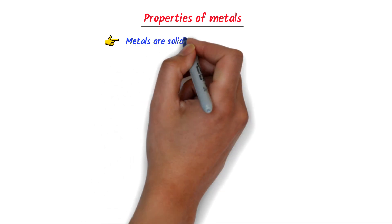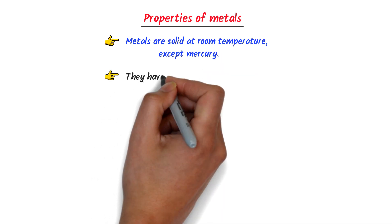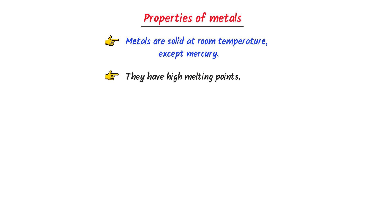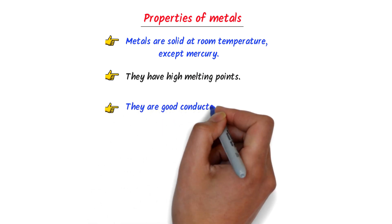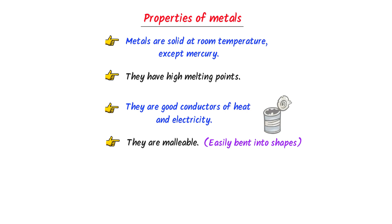Now what are the properties of metals? Well, metals are solid at room temperature, except mercury. Secondly, they have high melting points. Thirdly, they are good conductors of heat and electricity. Fourthly, they are malleable. It means that we can easily bend metals into different shapes.